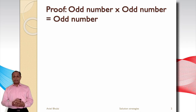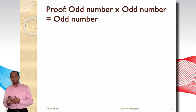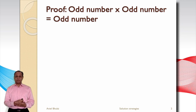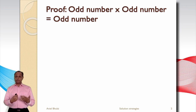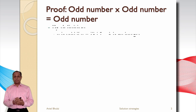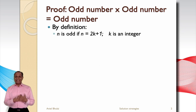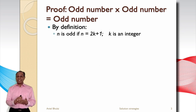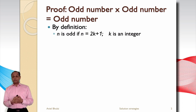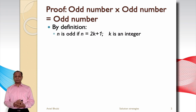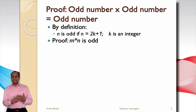In mathematics, an odd number is defined as a number that is not a multiple of two. Consequently, when you divide an odd number by two you always get a remainder of one. By definition, n is an odd number if n equals 2 times k plus 1, where k is an integer.